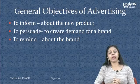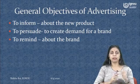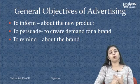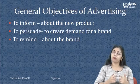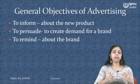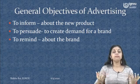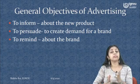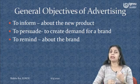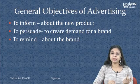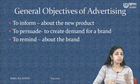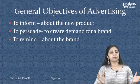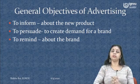Now let us look at the objectives of advertising, broken up into general and specific objectives. The general objectives are: to inform, to persuade, and to remind. When we say to inform, it is information about a new product — if you're going to buy an air conditioner, you should know what varieties are available, whether there is a new entrant, how it is performing, what the technology is like, the pricing, and the power consumption. So it informs you about a new product.